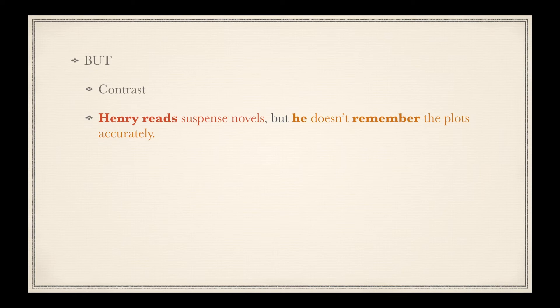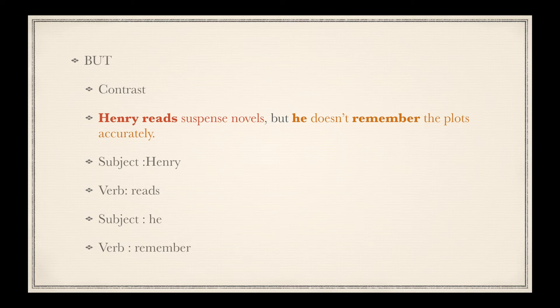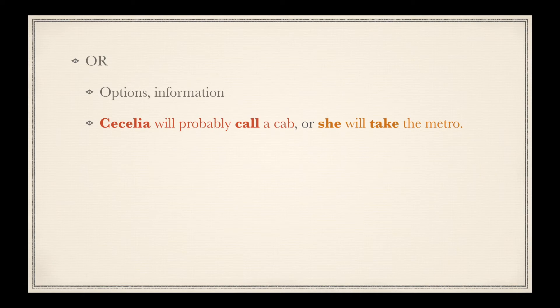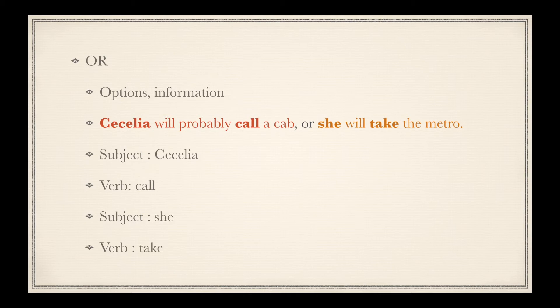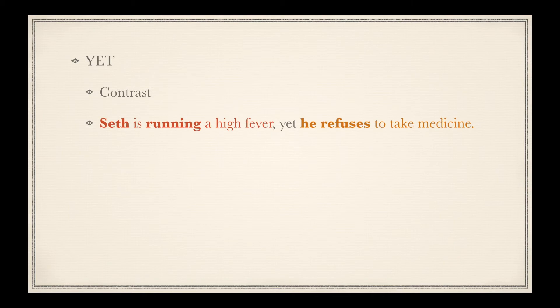But is indicative of contrast: 'Henry reads suspense novels, but he doesn't remember the plots accurately' — Henry is the subject and reads the verb. Or renders options: 'Cecilia will probably call a cab, or she will take the metro' — Cecilia is the subject with call as the verb in the first clause; she and take in the second. Yet is also a conjunction of contrast: 'Seth is running a high fever, yet he refuses to take medicine' — Seth is the subject, running the verb; he is the subject, refuses the verb.